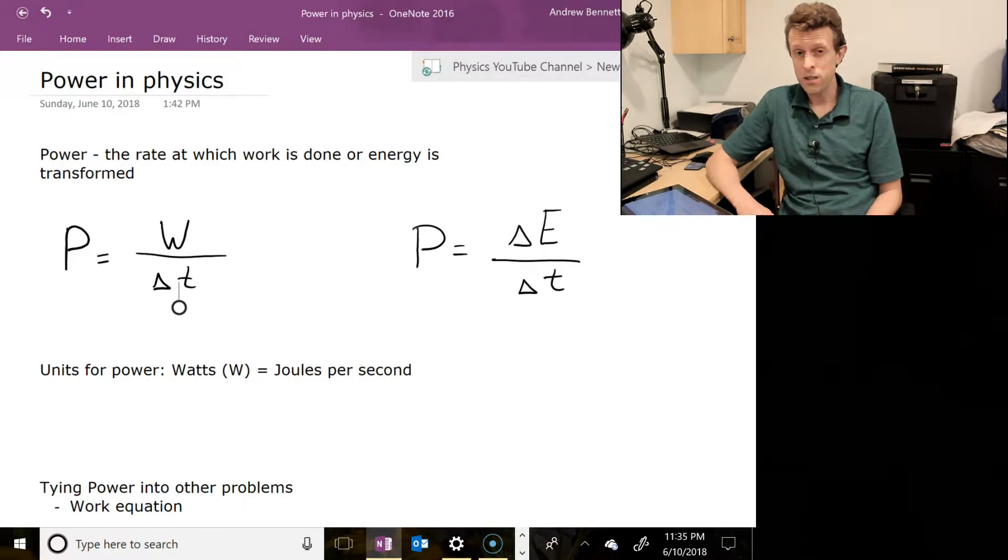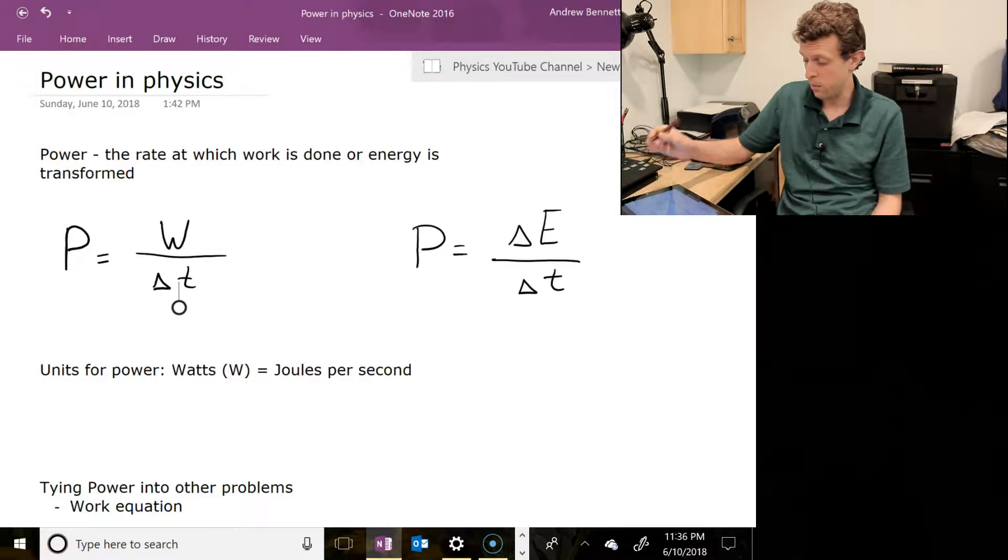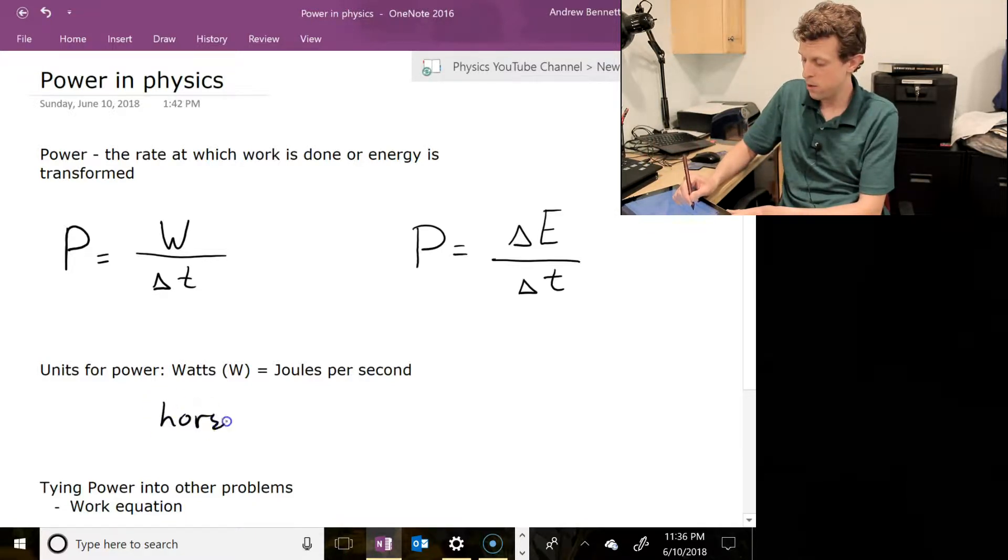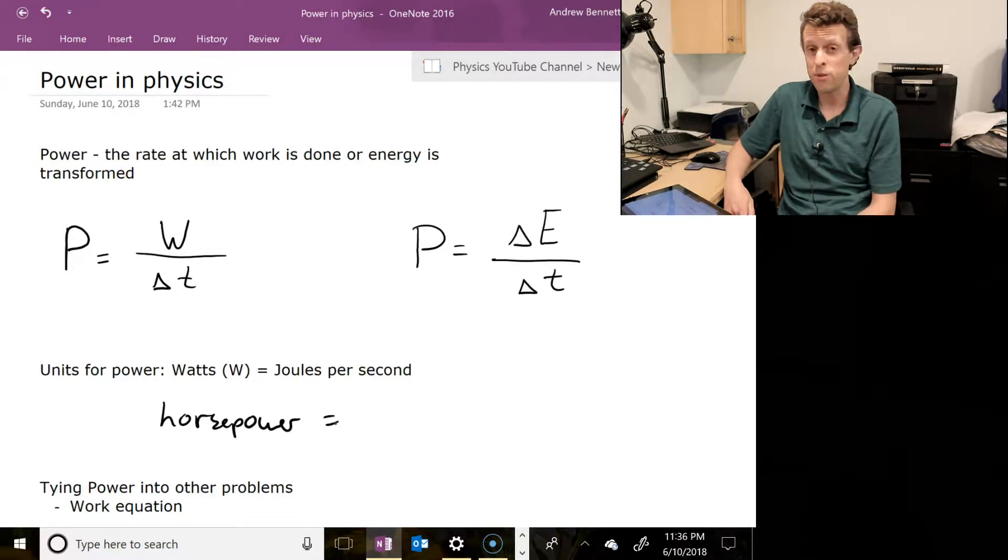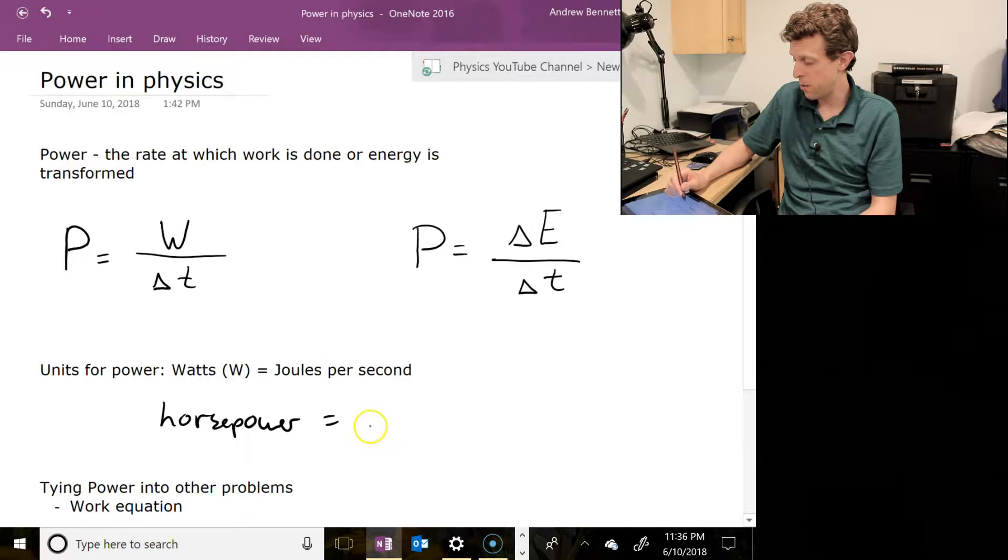For the units on this, we use watts for the standard metric system. Watts are the same as joules per second, so if I have a 60-watt light bulb, that means that light bulb is using 60 joules of energy every second. So if I let it go for two seconds, it would use 120 joules. Three seconds would be 180 joules. The other unit that you would have seen for power would be horsepower, and horsepower is the English system unit, and this is used for typically things that are bigger power users, like engines, and so a horsepower is the same as 746 watts.